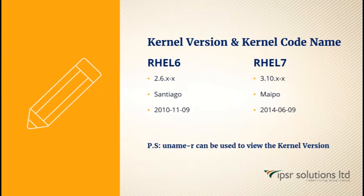The next difference is in the kernel version and the kernel code name. RHEL6 had a kernel code name of Santiago, which was released on November 9th, 2010, and the version was 2.6.x_x. For RHEL7, the name was Maipo, which was released on June 9th, 2014. The command 'uname -r' can be used to view the kernel version.